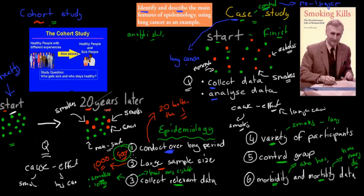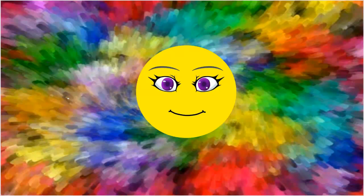To sum it up, you need to know these six factors and whether they apply to a cohort study or a case control study. You should also know how to apply them, because HSC questions might ask you to construct your own cohort or case control study. For example, if given a question like 'design an experiment to figure out if eating cheeseburgers kills you,' you'd have to think about what sample size to use, what time period to conduct it over, and what data to collect. I hope that was useful — thank you for watching.